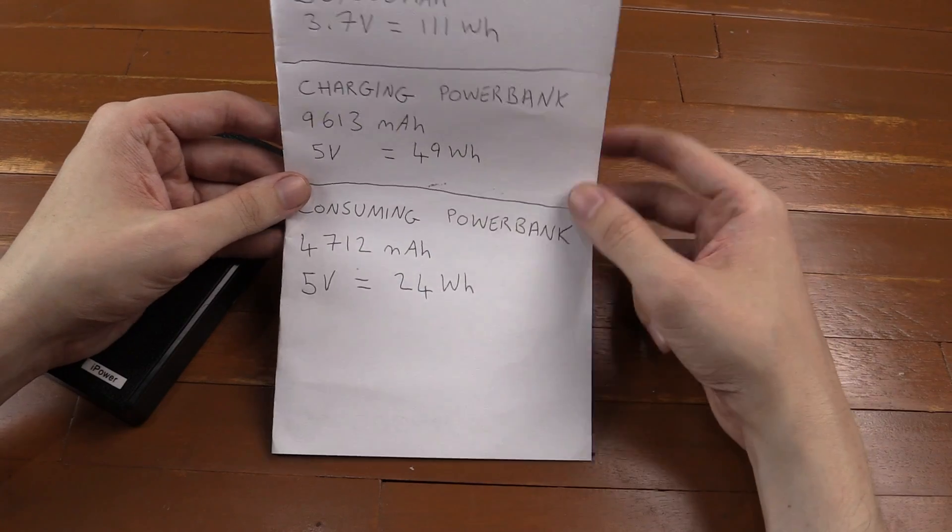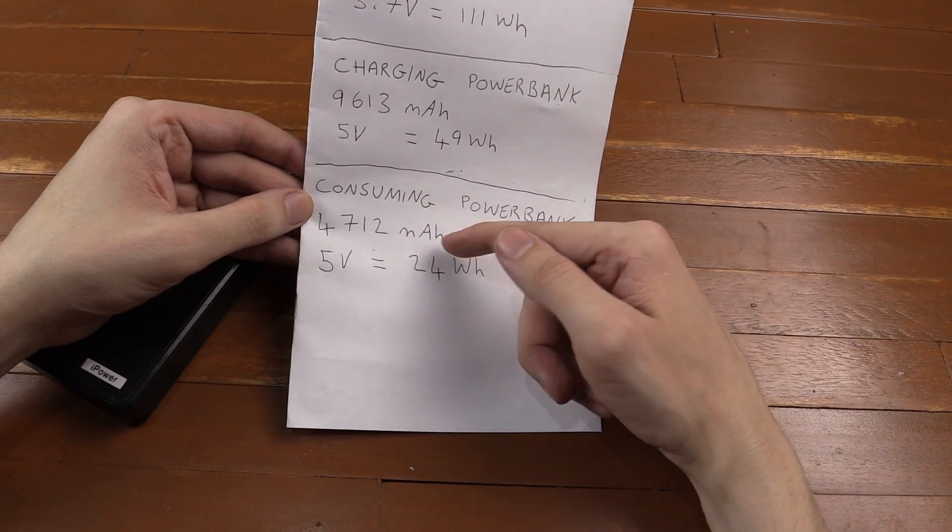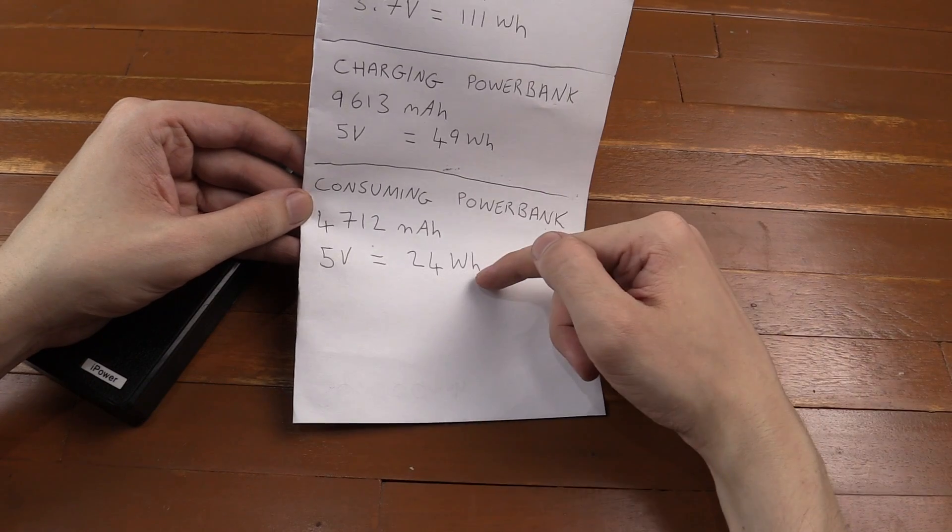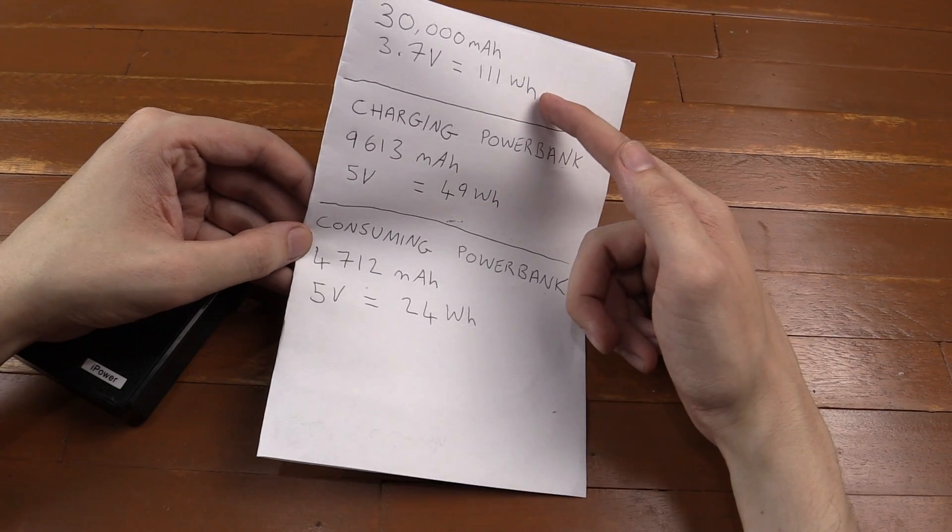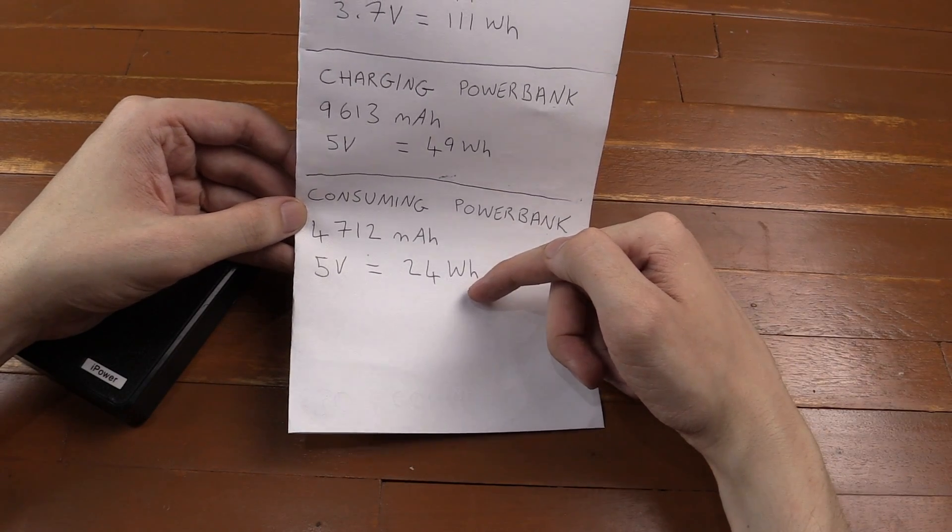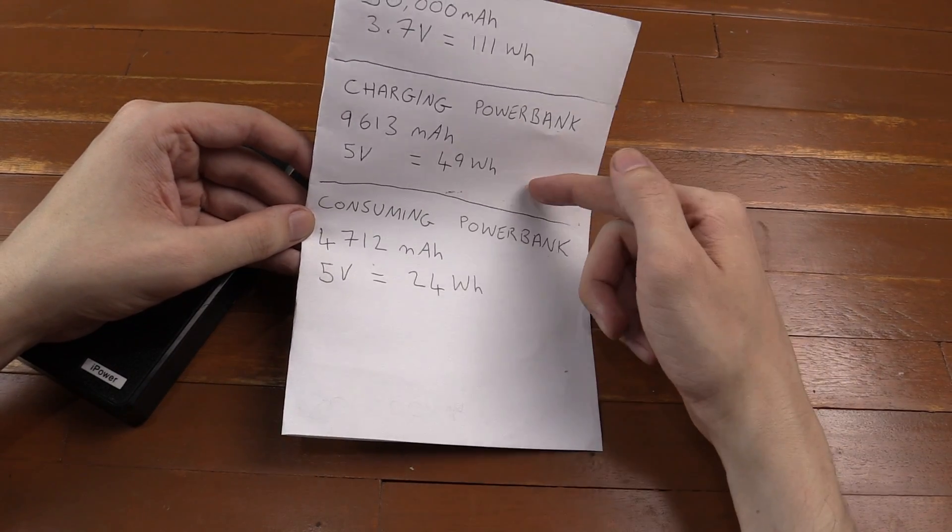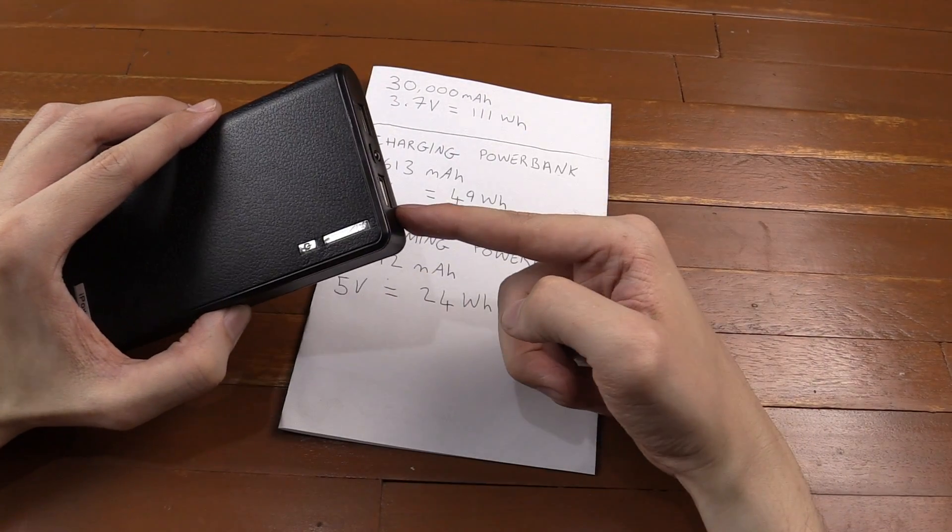But then when we consumed the power coming out of the power bank, we only got 4,712 milliamp-hour at 5 volts, which works out to 24 watt-hours. So from what it's meant to be, 111 watt-hours, we actually got out 24 watt-hours.